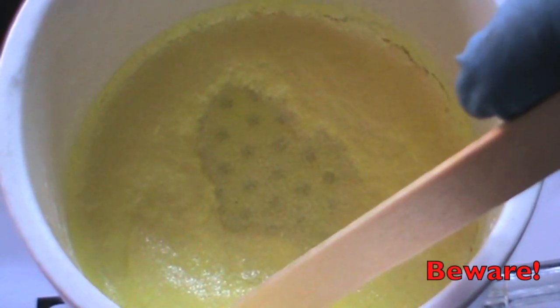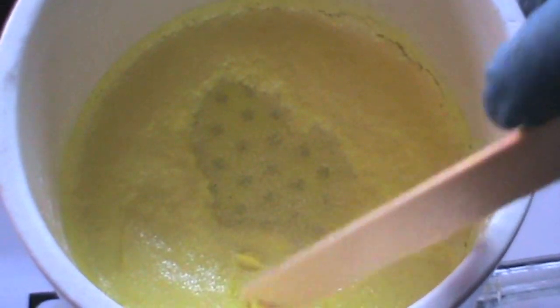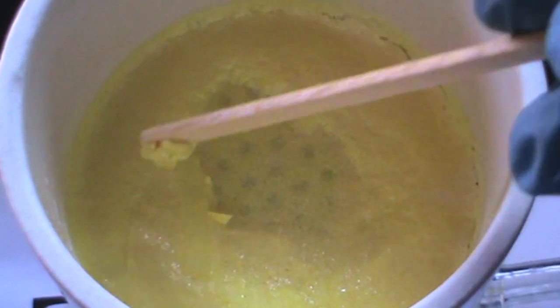Be aware to store the picric acid in a wet state in a glass amber bottle with a plastic lid. Do not store in a metal container as it could form shock-sensitive explosive metal picrates.